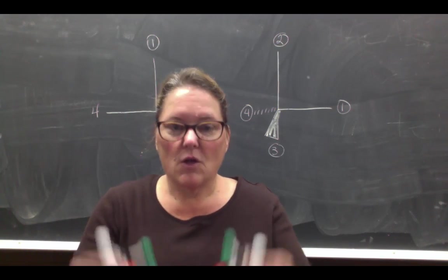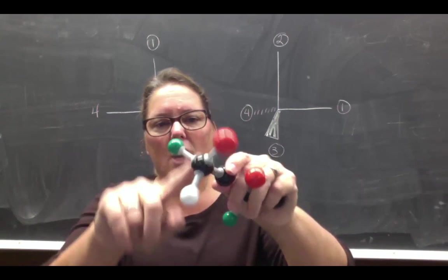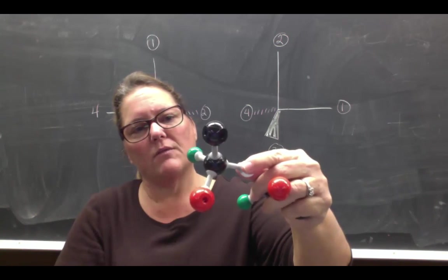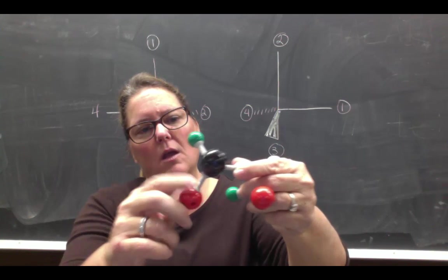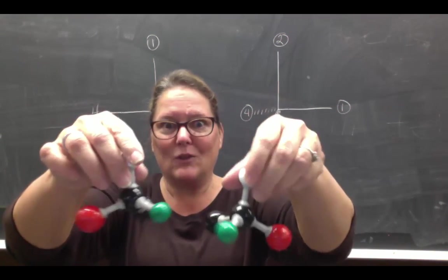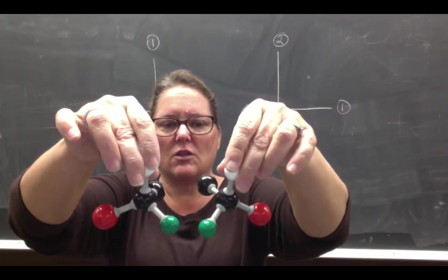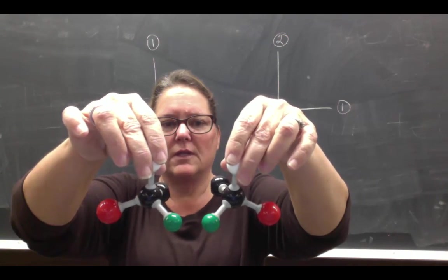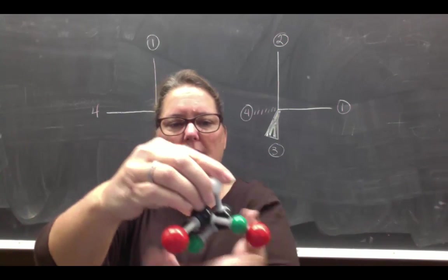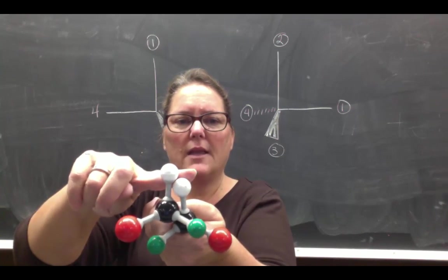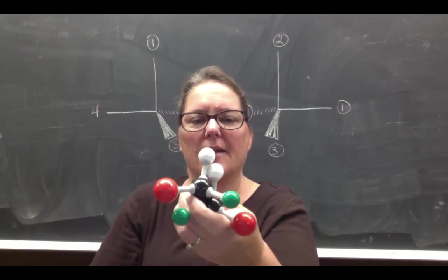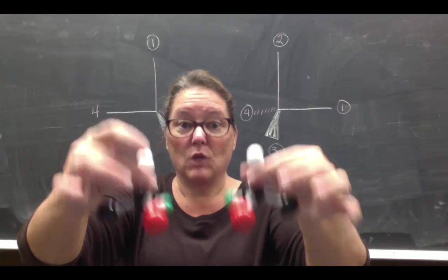With your model kit, build two models with carbon in the middle and four different atoms coming off of it. I'll represent four different R groups using a black, green, red, and white atom. You need two models to make mirror images. Place them on the table with the same color up so they are mirror images of each other — green across from green, black across from black, red across from red. When you try to put one on top of the other, you can line up two colors but two will never line up — these are non-superimposable mirror images.